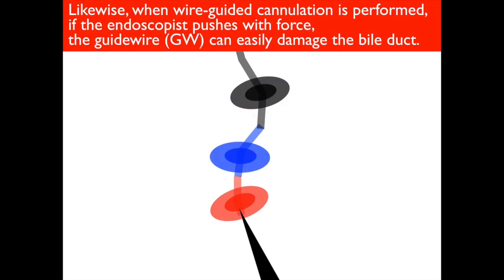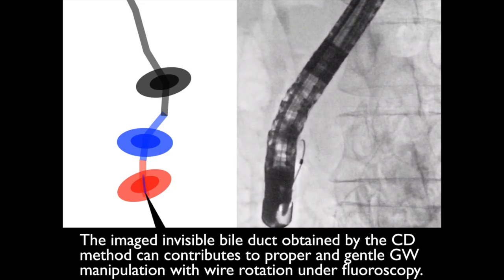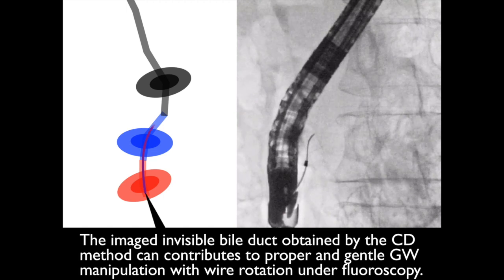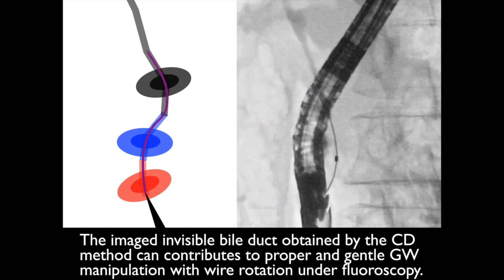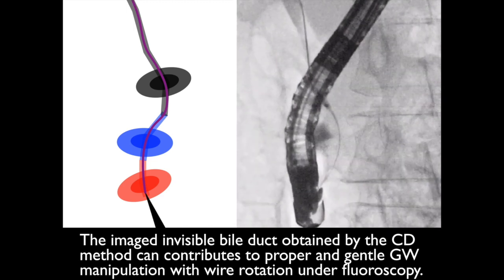Likewise, when wire-guided cannulation is performed, if the endoscopist pushes with force, the guide wire can easily damage the bile duct. The endoscopist must manipulate the guide wire slowly and gently through the hole of each imagined CD when wire-guided cannulation is performed. The imagined invisible bile duct obtained by the CD method can contribute to proper and gentle guide wire manipulation with wire rotation under fluoroscopy.